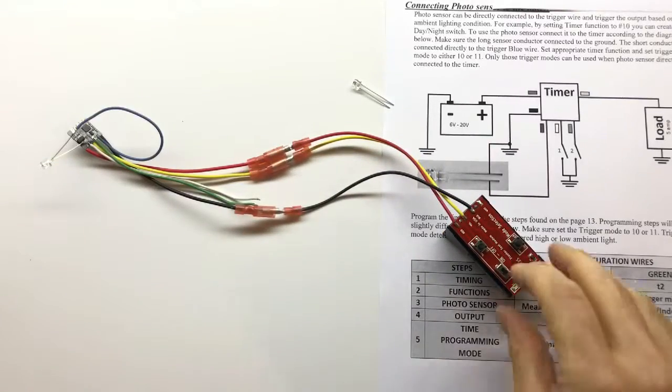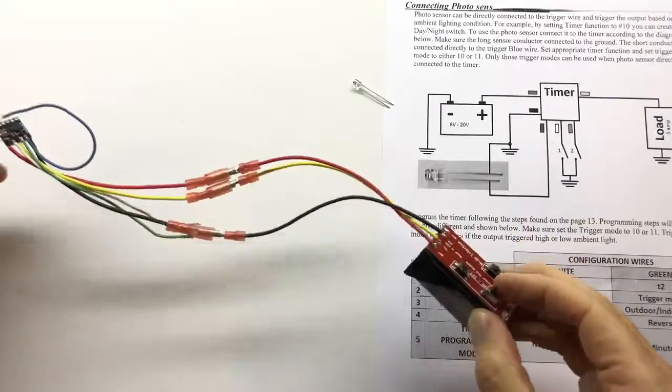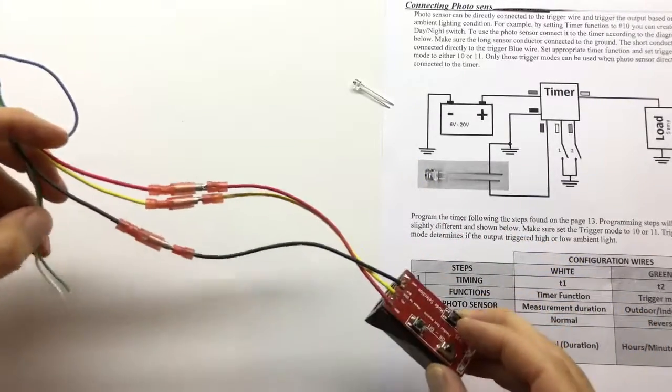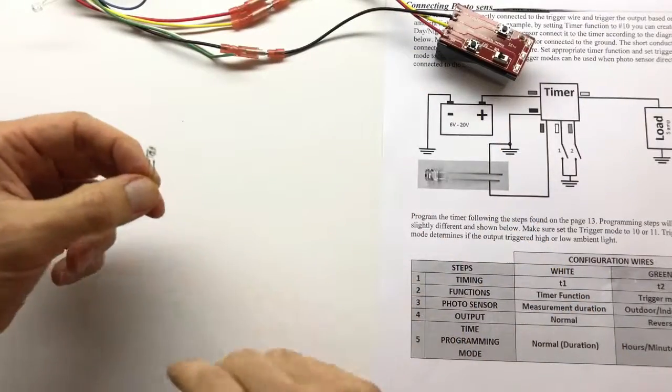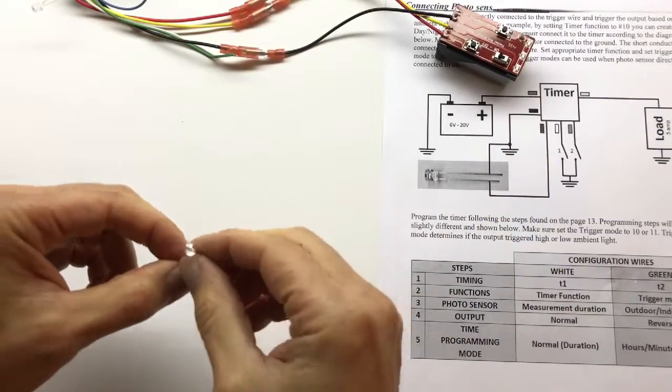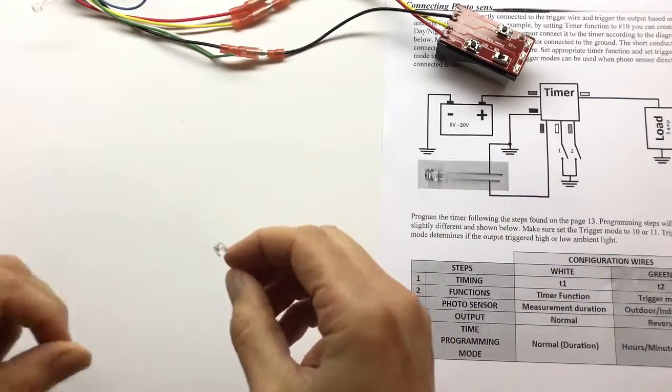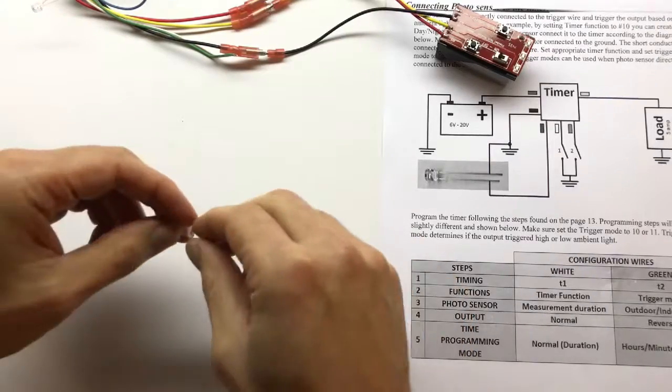Okay. So here it is. Here's how it works. And you can use all the functions of the timer with this sensor. Now the sensor could be mounted anywhere. It's pretty small. So you can drill a hole and stick it through the hole. You can also use the lenses like this.